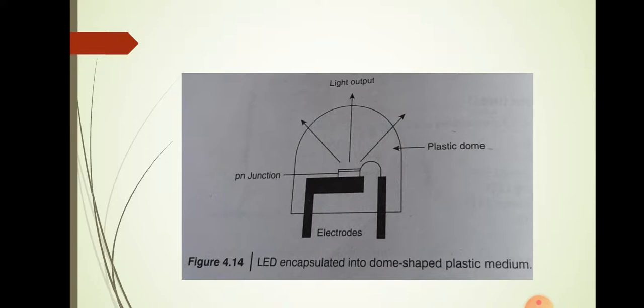This is the dome LED with its dome shape. The total internal reflection condition is avoided because the angle of incidence is less than the critical angle. This results in maximum light output in the case of the dome LED.